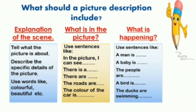Next, we are going to write what is in the picture — what you can see. For example, if it's a birthday party picture, you might see a cake, decorations, lighting, children, a table, and food items. You are going to use sentences like 'In the picture I can see...', 'There is a...', 'There are...', or you can begin with 'The roads are...' or 'The color of the car is...' depending on the picture.